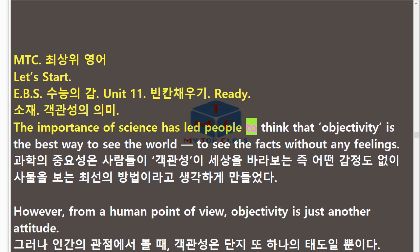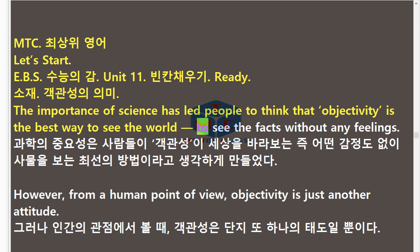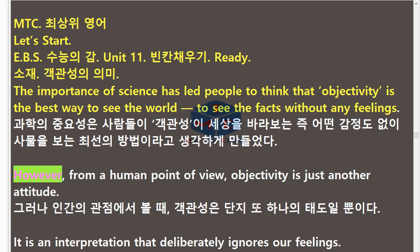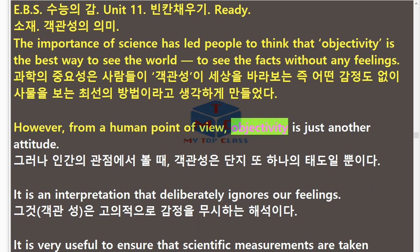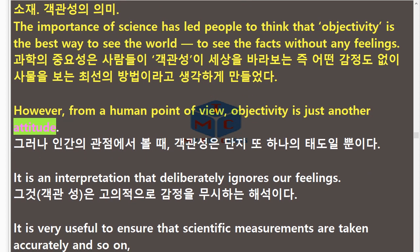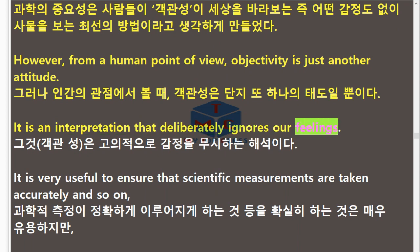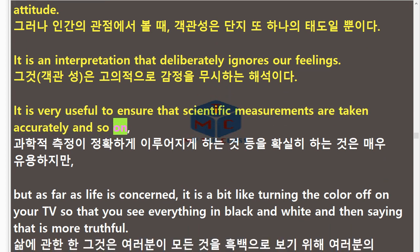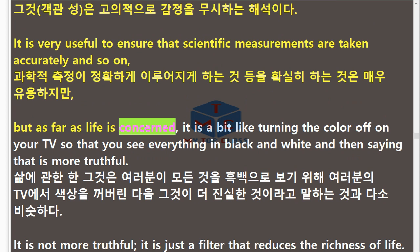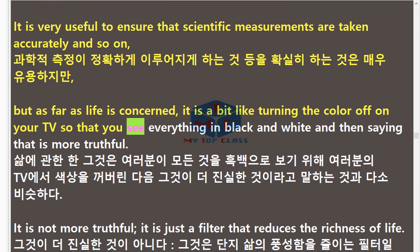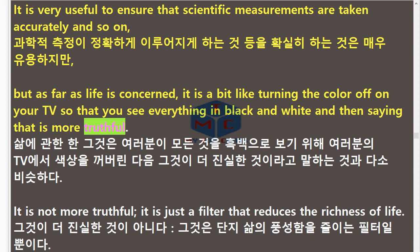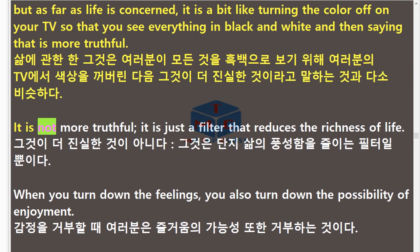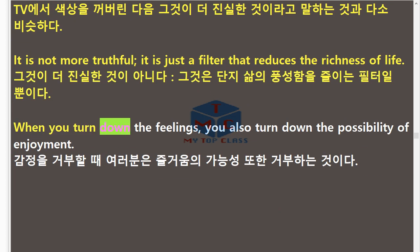The importance of science has led people to think that objectivity is the best way to see the world — to see the facts without any feelings. However, from a human point of view, objectivity is just another attitude. It is an interpretation that deliberately ignores our feelings. It is very useful to ensure that scientific measurements are taken accurately and so on. But as far as life is concerned, it is a bit like turning the color off on your TV so that you see everything in black and white and then saying that is more truthful. It is not more truthful; it is just a filter that reduces the richness of life. When you turn down the feelings, you also turn down the possibility of enjoyment.